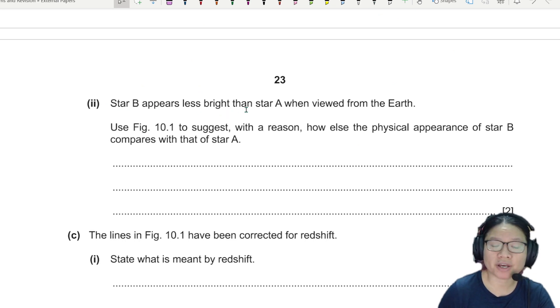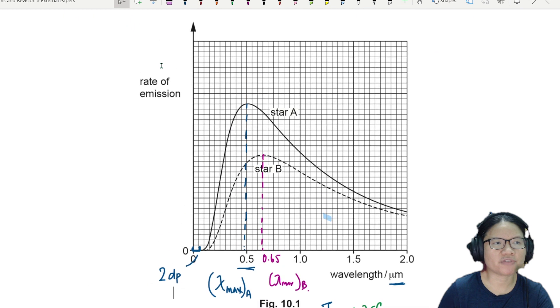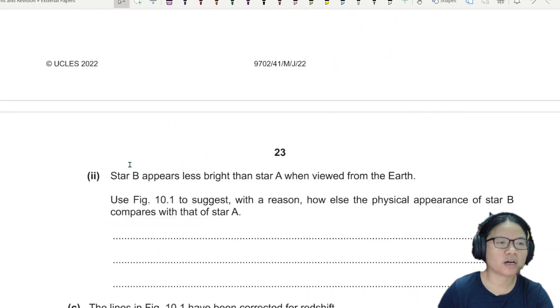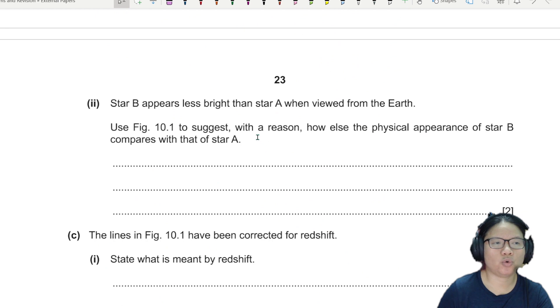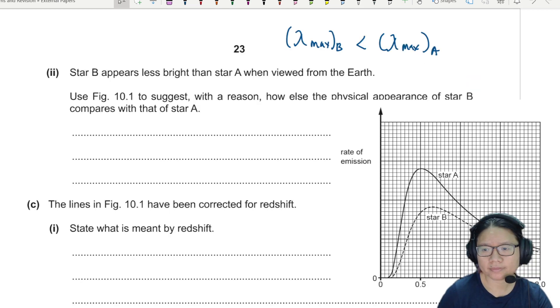Star B appears less bright than star A when viewed from Earth. Obviously, because the intensity is less. This rate of emission is intensity. So right now, suggest, use the graph, suggest with a reason, how else the physical appearance of star B compares to that of star A. So we refer to the lambda maximum. The lambda maximum for B is shorter than the lambda maximum for A. Besides the fact that the peak values are different. Also at the same time, the lambda maximum is different.